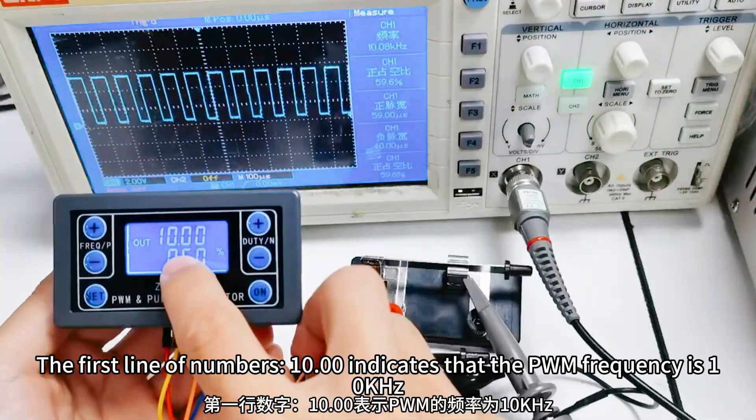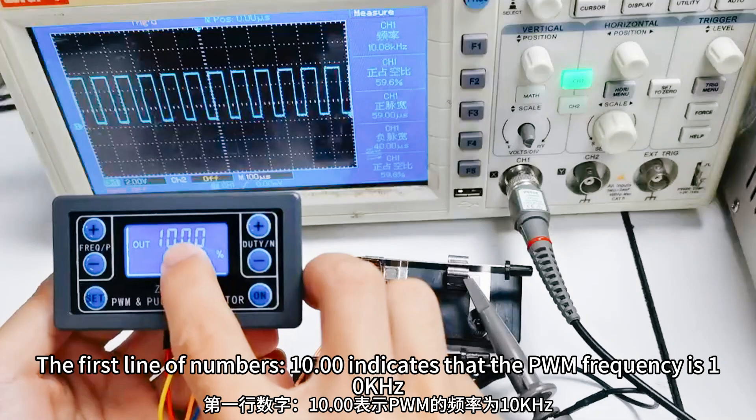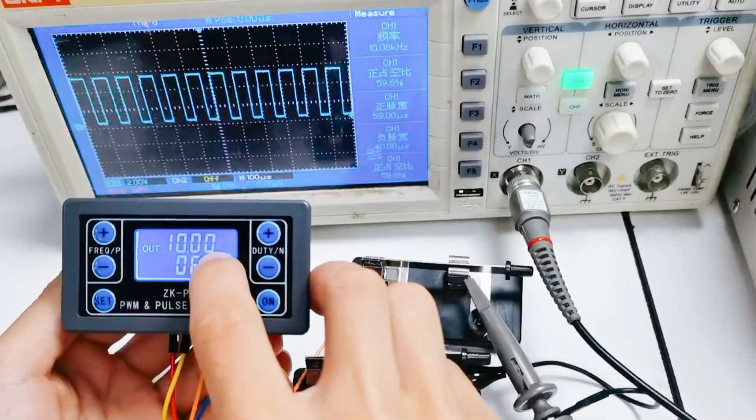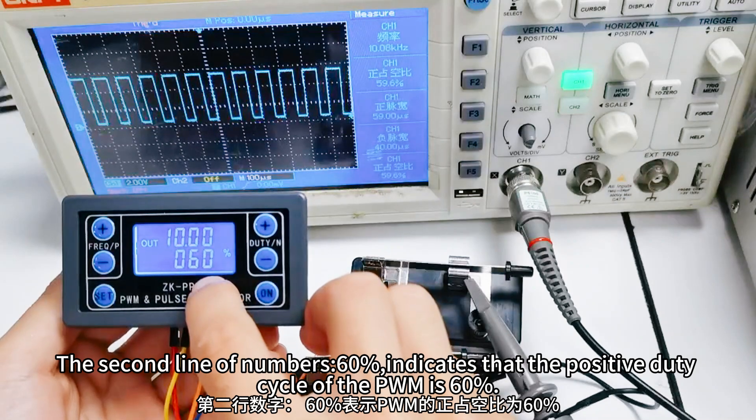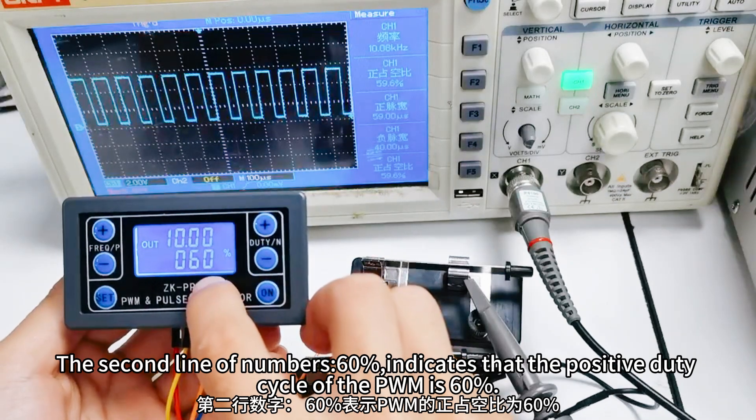The first line of numbers, 10, indicates that the PWM frequency is 10 kHz. The second line of numbers, 60%, indicates that the positive duty cycle of the PWM is 60%.